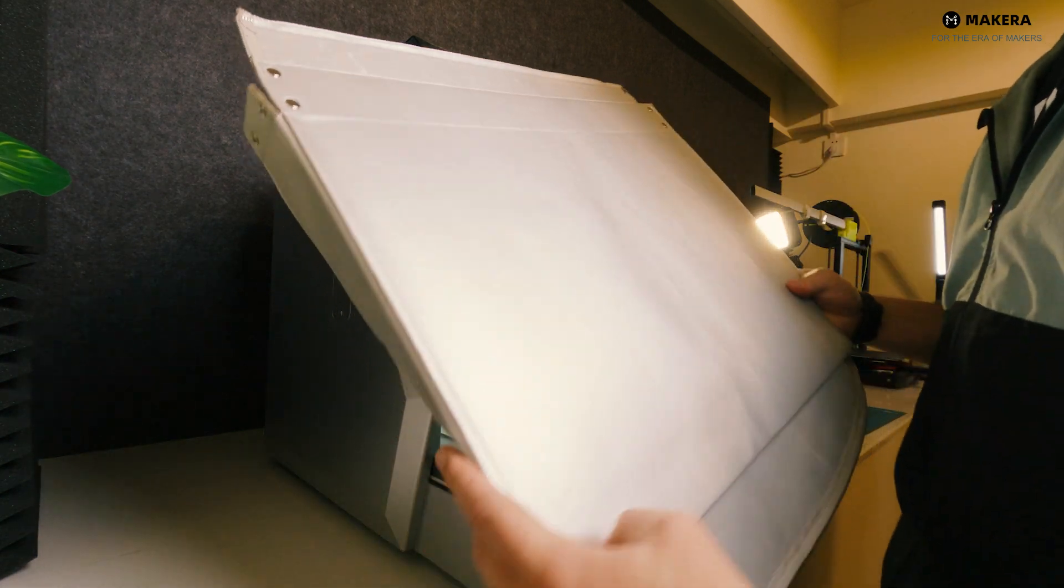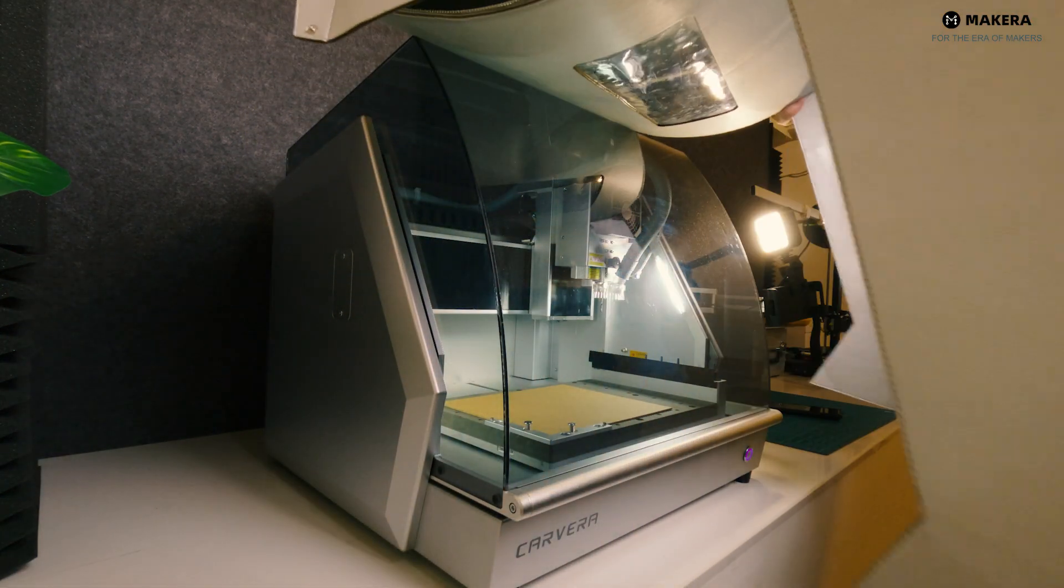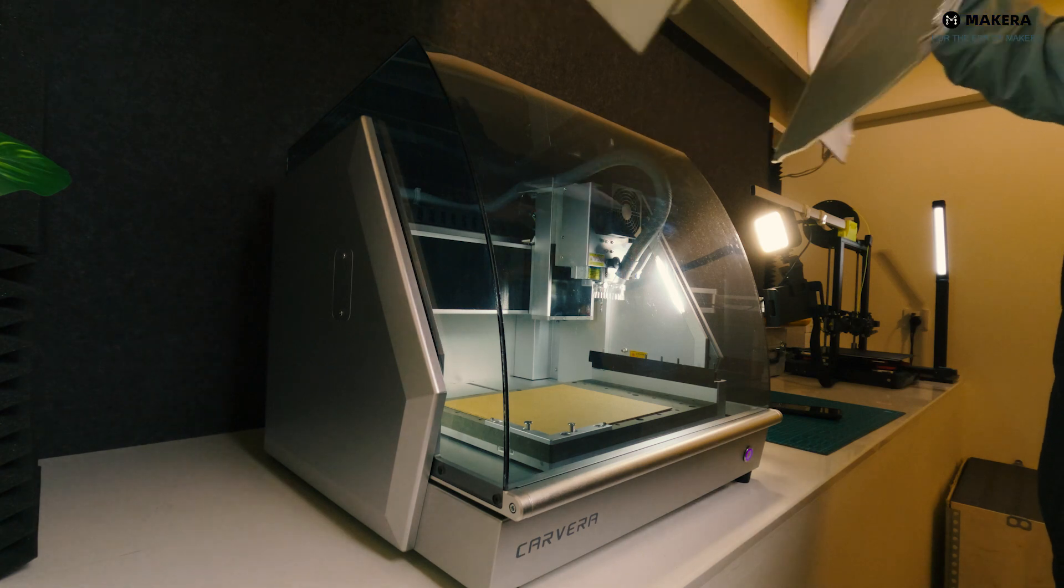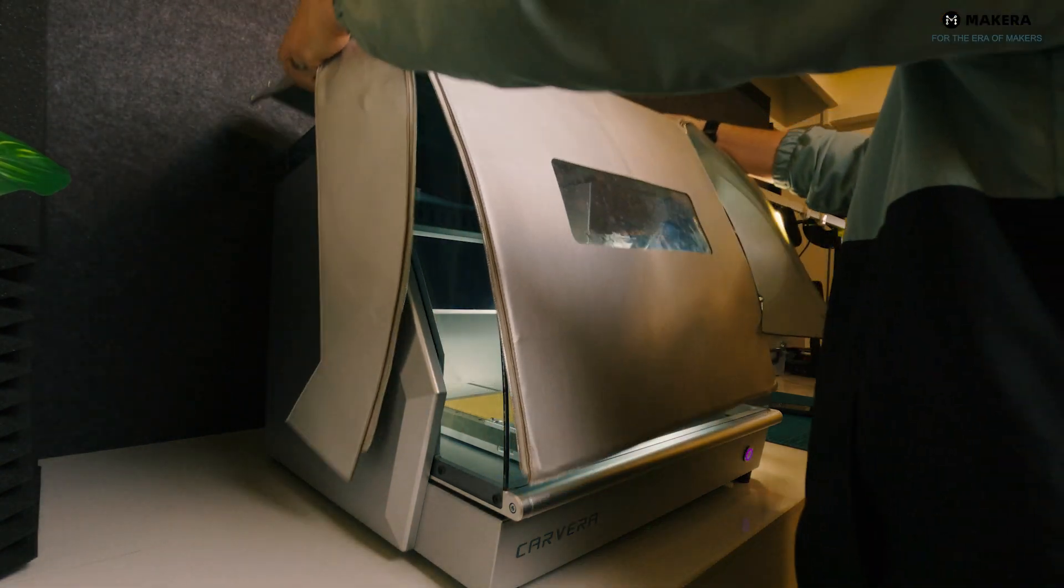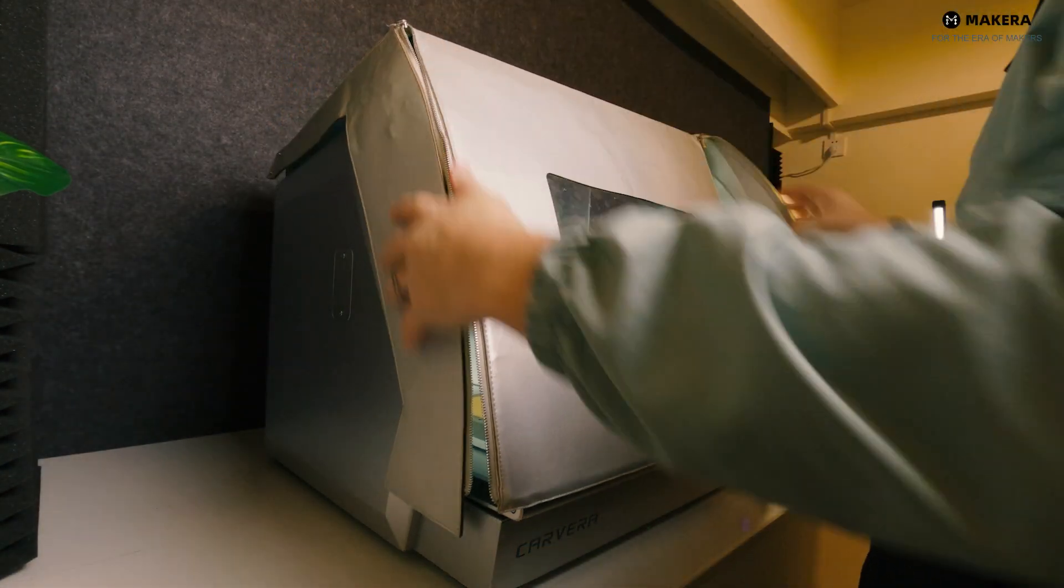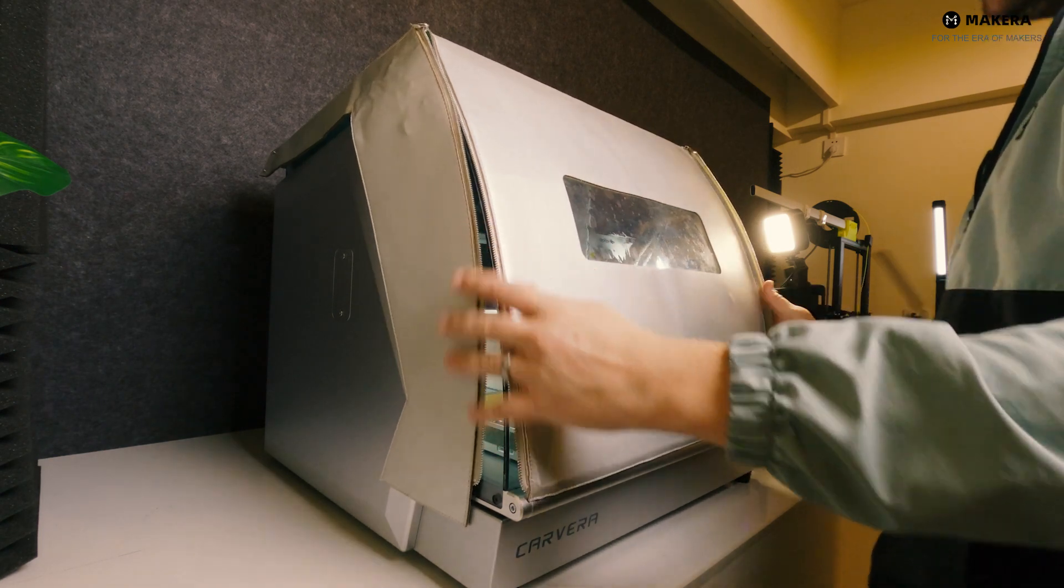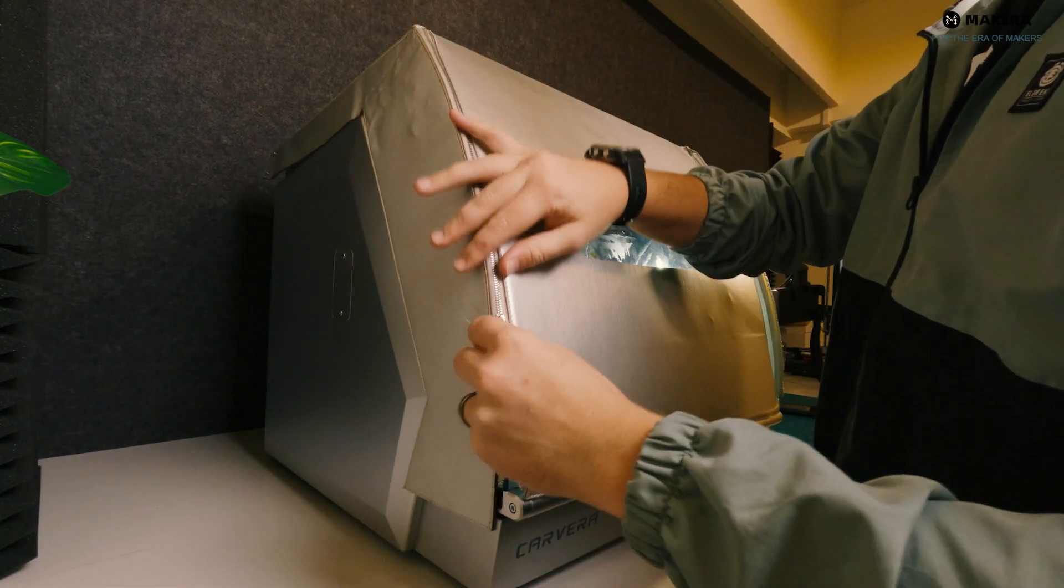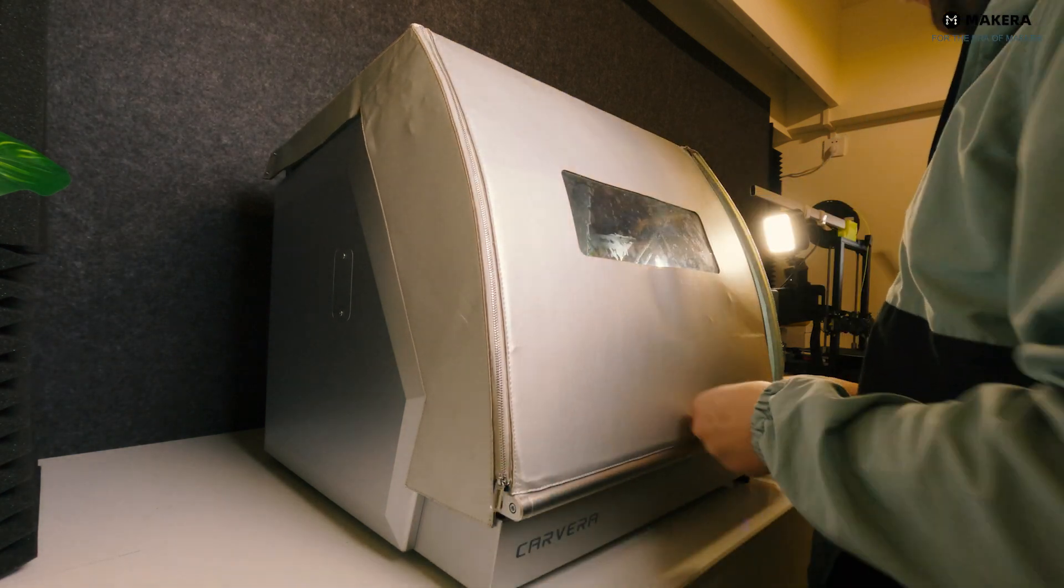Lastly, let's look at the laser module. Let's start by putting on the optional laser cover. This is available as an optional extra on the online store at makera.com. This is recommended to people that use the laser for excessive time periods. It's a really easy installation, two zips in the front and four clips at the back.